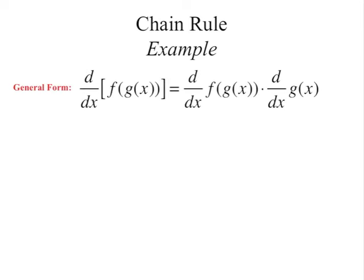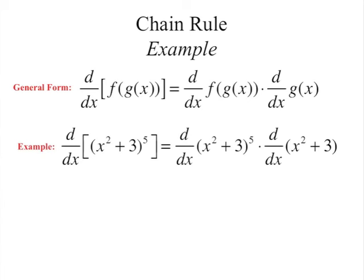Finally, we have the chain rule. If you have a function inside another function — g of x inside f of x — you do the derivative of the outside, leaving the inside intact, and then multiply by the derivative of the inside. It's called the chain rule because you chain on the derivative of the inner function.